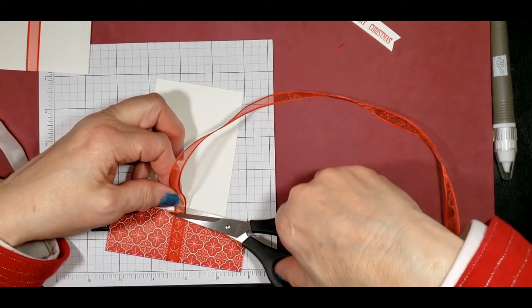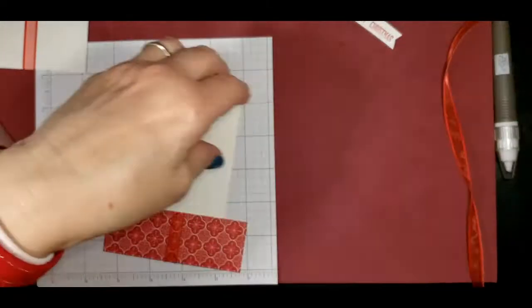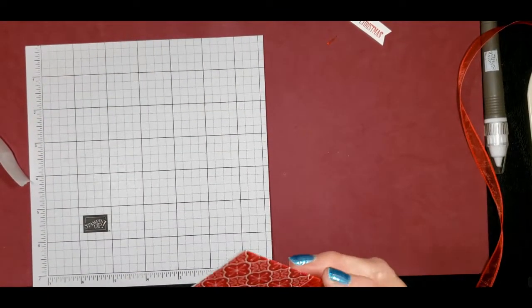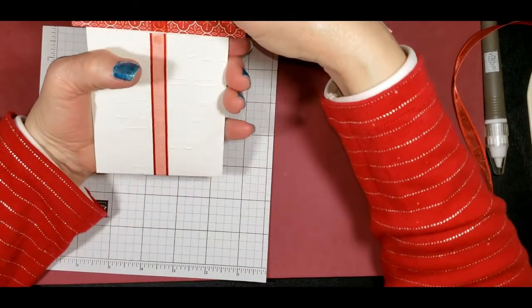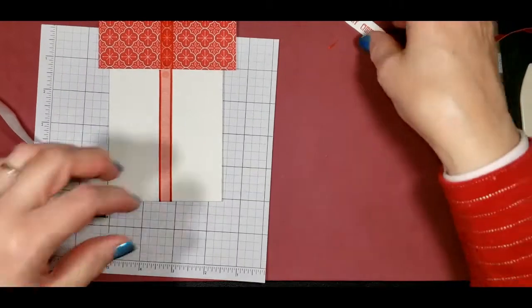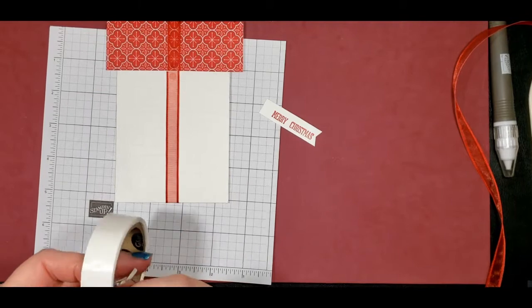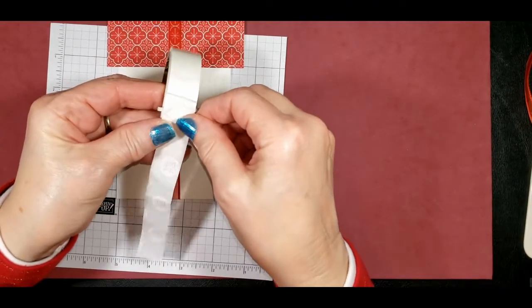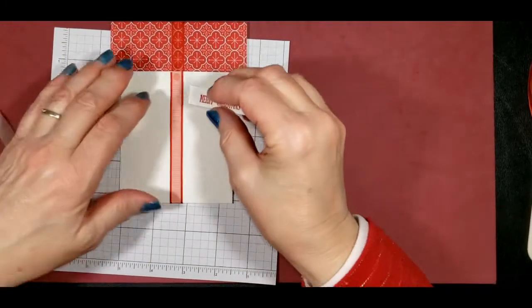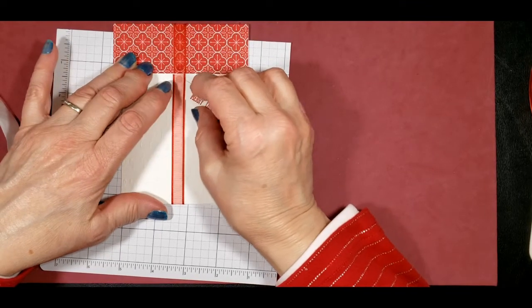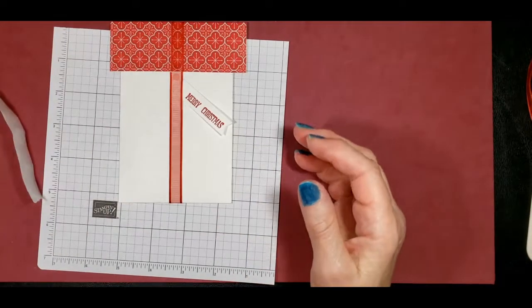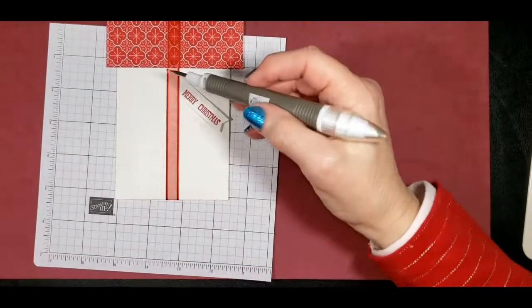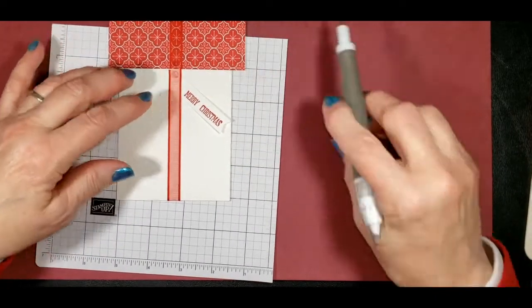What I need to do next is get this put on there. This being our Merry Christmas. So we'll just do another glue dot. I'm just going to take the glue dot, take the Merry Christmas, and get it stuck on there. Pull it off. Then we're going to go underneath the ribbon. And then we're going to add one more glue dot. Put it on the ribbon on top of the other glue dot.